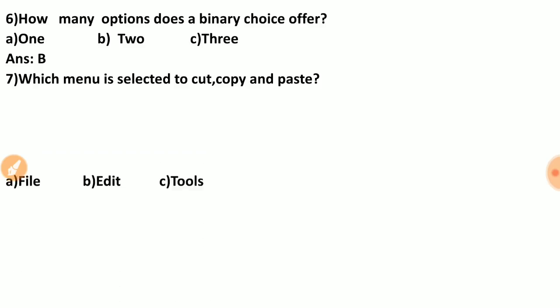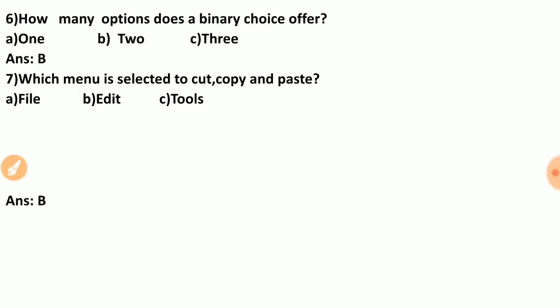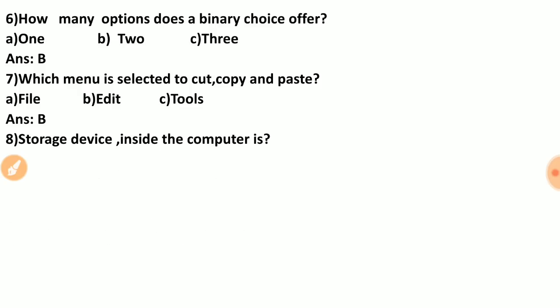Question seven: which menu is selected to cut, copy, and paste? Options are: file, edit, tools. The correct answer is B — the Edit menu is used for cut, copy, and paste operations.